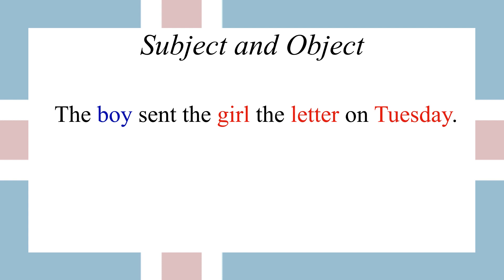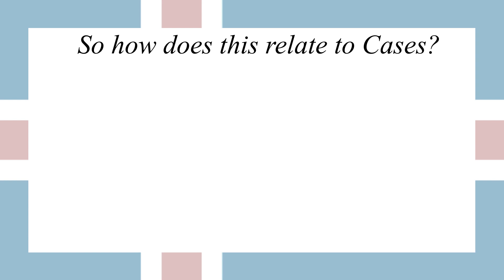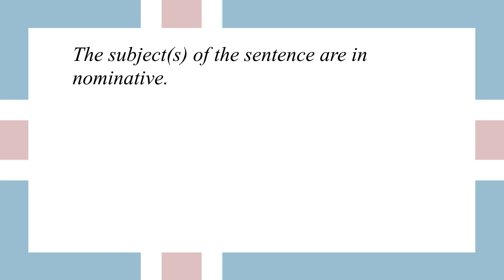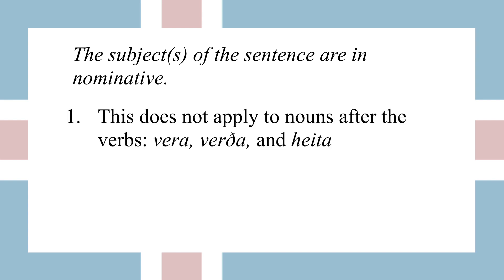Now that we've talked about subjects and objects, how does this relate to cases? The subjects of the sentence are in the nominative case — the dictionary form. The objects of the sentence are in one of the three other cases. One thing to watch out for: this does not apply to nouns that come after the verbs vera, verda, and heita, which mean to be, to become, and to be called. In that case, both nouns are in nominative. So 'jeg er madur' — I am a man — both jeg and madur are nominative. You can reverse it and say 'madur er jeg' and it still means the same thing.